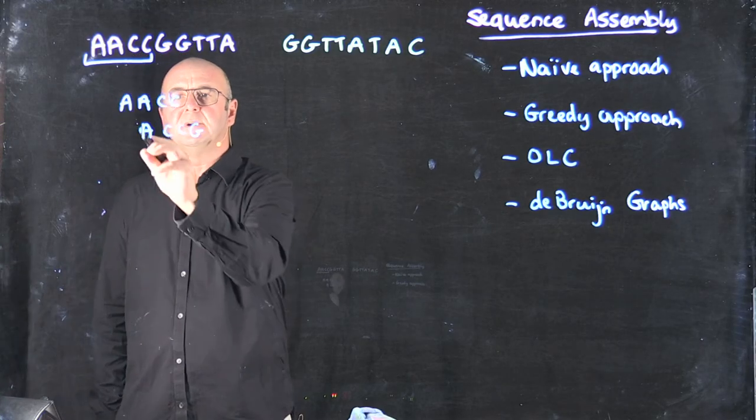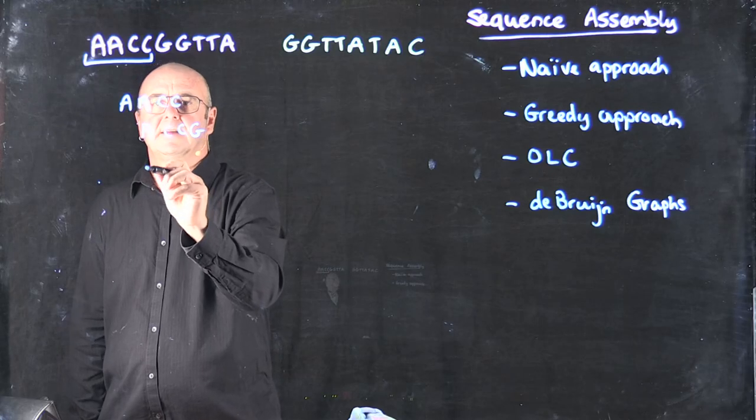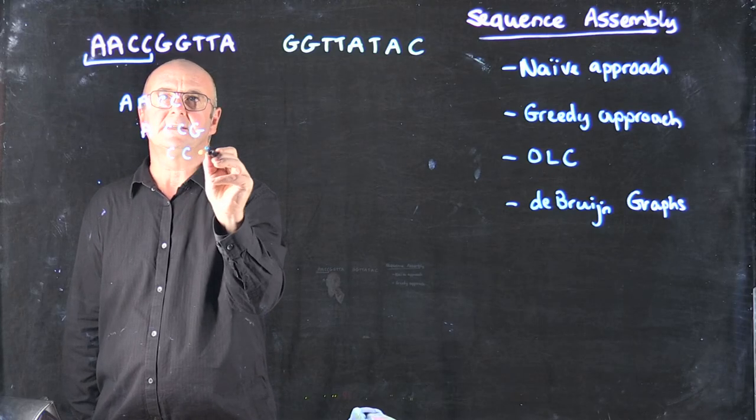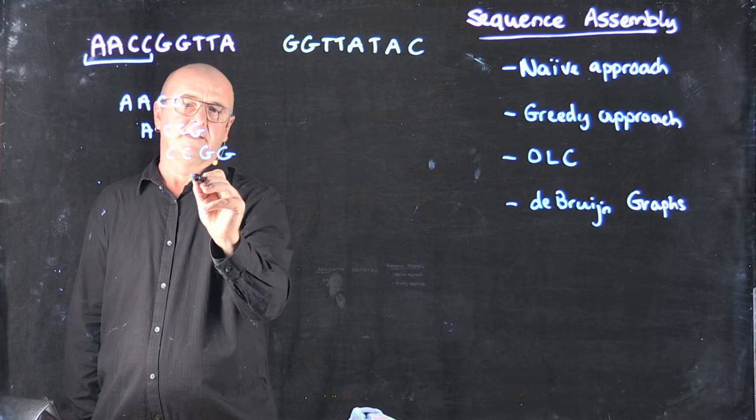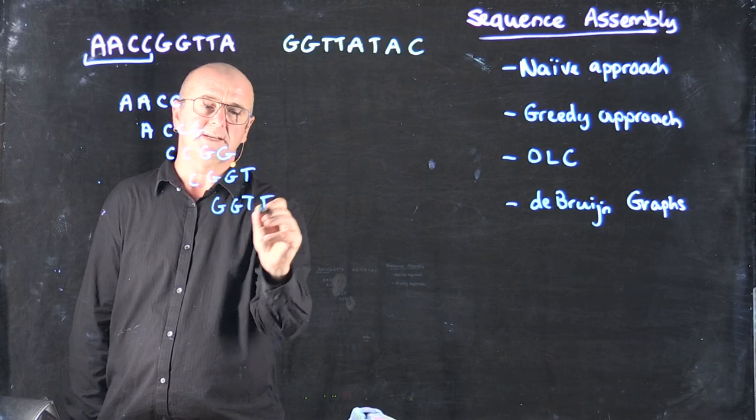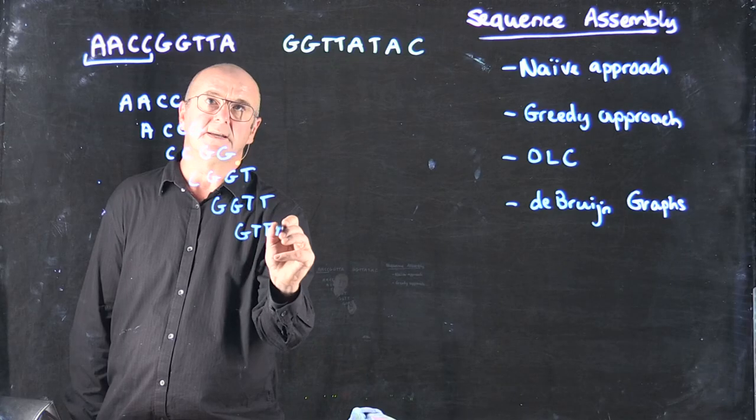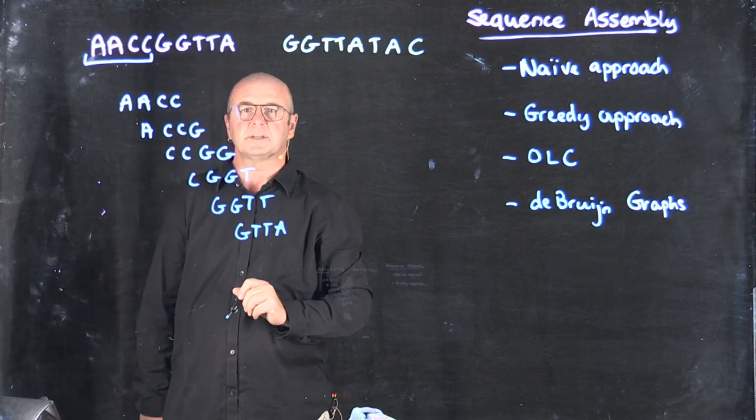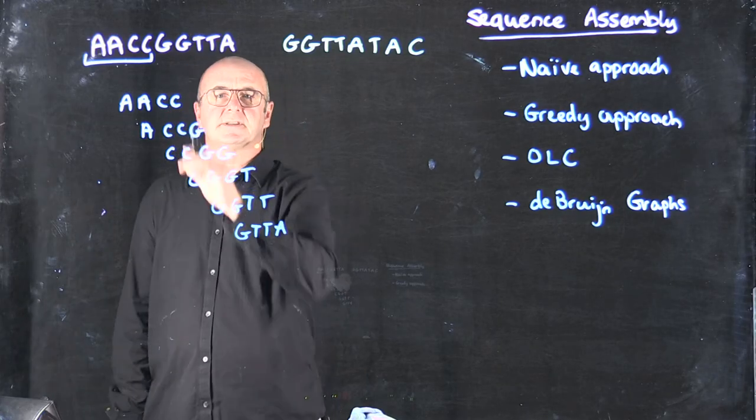So I start with AACC, ACCG, CCGG, CGGT, GGTT, GTTA, and that's all the possible 4-mers from this first sequence.